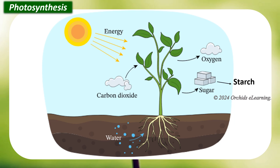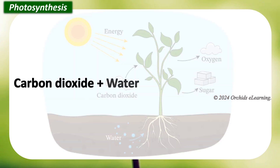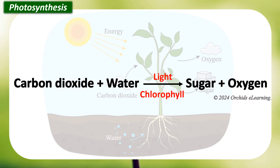The sugar produced is stored in the form of starch in various parts of the plant, and oxygen is released. The reaction that takes place during photosynthesis can be written as: carbon dioxide plus water, in the presence of light and chlorophyll, produces sugar plus oxygen.